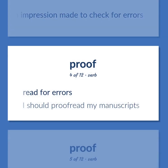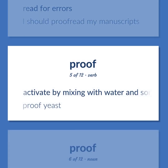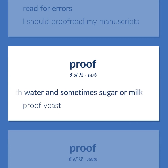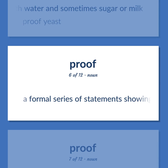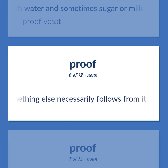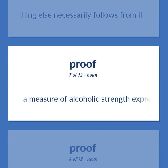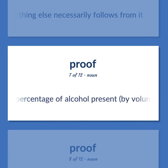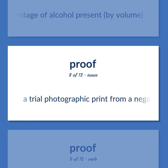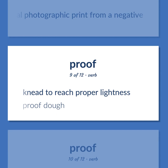Proof: Read for errors — I should proofread my manuscripts. Activate by mixing with water and sometimes sugar or milk — proof yeast. A formal series of statements showing that if one thing is true something else necessarily follows from it. A measure of alcoholic strength expressed as an integer twice the percentage of alcohol present, by volume. A trial photographic print from a negative — need to reach proper lightness. Proof dough.